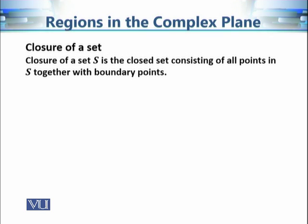Another definition is the closure of a set. A set may or may not be closed, but we can ask: can we find the smallest closed set containing the given set? The answer is yes — we find the closure. The closure of S is the smallest closed set containing S, constructed by taking all points of S together with all its boundary points and forming their union.